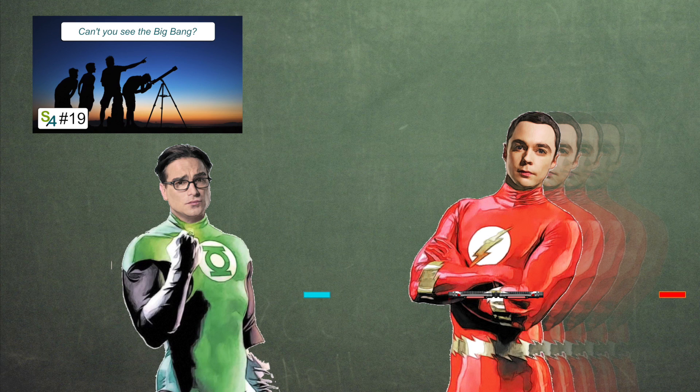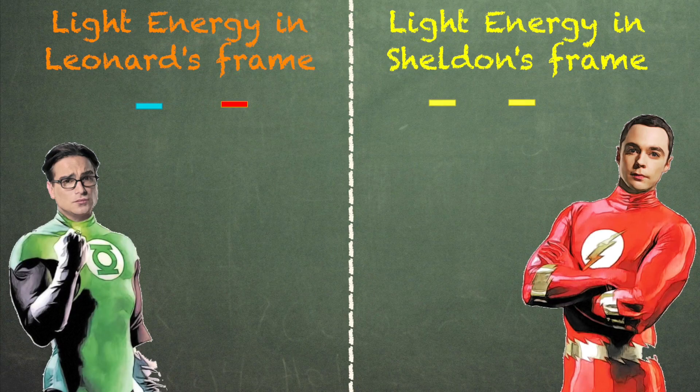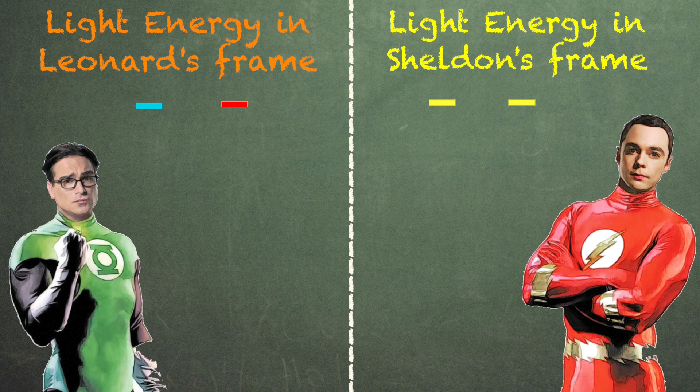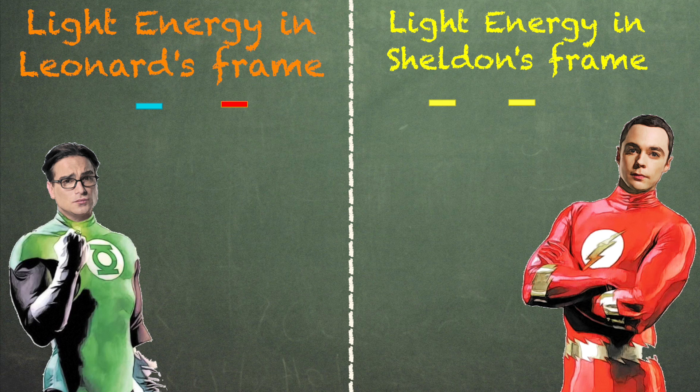The light beam that goes towards Leonard will be blue-shifted and will carry more energy, while the light beam that goes away from Leonard will carry less energy. However, overall, when we carefully add the energy of the two light beams, we end up concluding that the light beams carry more energy in Leonard's frame than in Sheldon's.